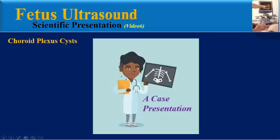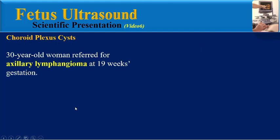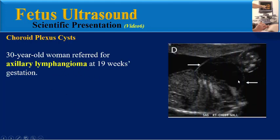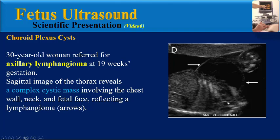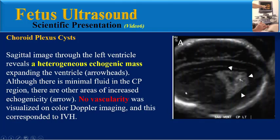Let me review a teaching case. A 30-year-old woman referred for fetal axillary lymphangioma at 19 weeks gestation. A sagittal image of the fetus reveals a complex cystic mass involving the chest wall, neck, and fetal face reflecting lymphangioma. Sagittal image through the left ventricle reveals a heterogeneous echogenic mass expanding the ventricle. Although there is minimal fluid in the choroid plexus regions, there are other areas of increased echogenicity. No vascularity was visualized on color Doppler imaging, corresponding to intraventricular hemorrhage.